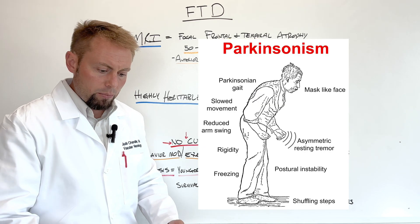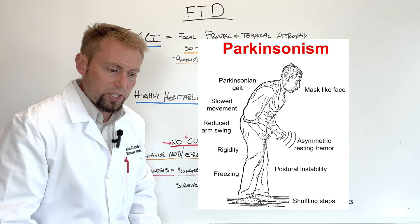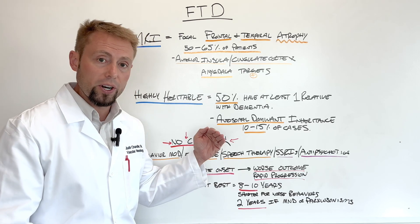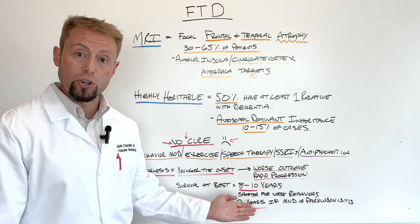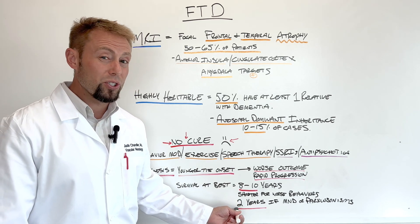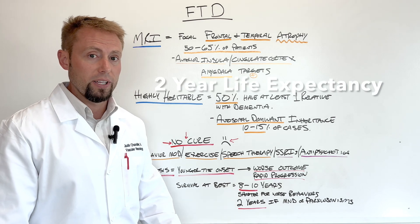And that's things where patients become more rigid. They get more stiff. Maybe they have some tremor that's associated with their cognitive changes. And if they have that or motor neuron disease, then that means at best you're looking at two years of life left.